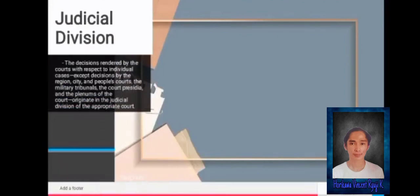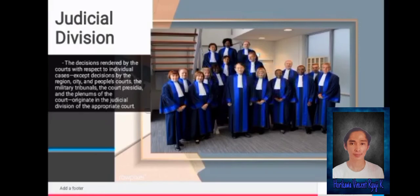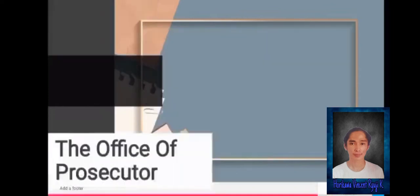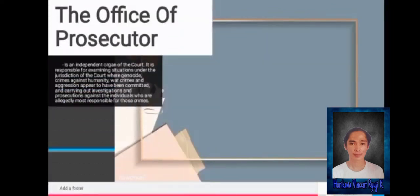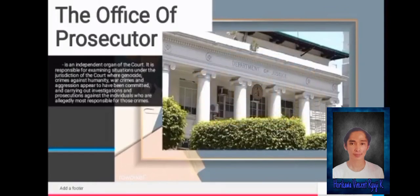The ICC's judicial division handles decisions rendered by the court with respect to individual cases. The Office of the Prosecutor is an independent organ of the court, responsible for examining situations under the court's jurisdiction where genocide, crimes against humanity, war crimes, and aggression appear to have been committed, and for carrying out investigations and prosecuting individuals alleged to be most responsible for those crimes.